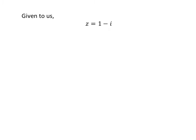We are given z is equal to 1 minus i. We need to find z raised to the power of 6. Raising the power of both sides of the equation by 6 gives us z raised to the power of 6 is equal to 1 minus i raised to the power of 6.